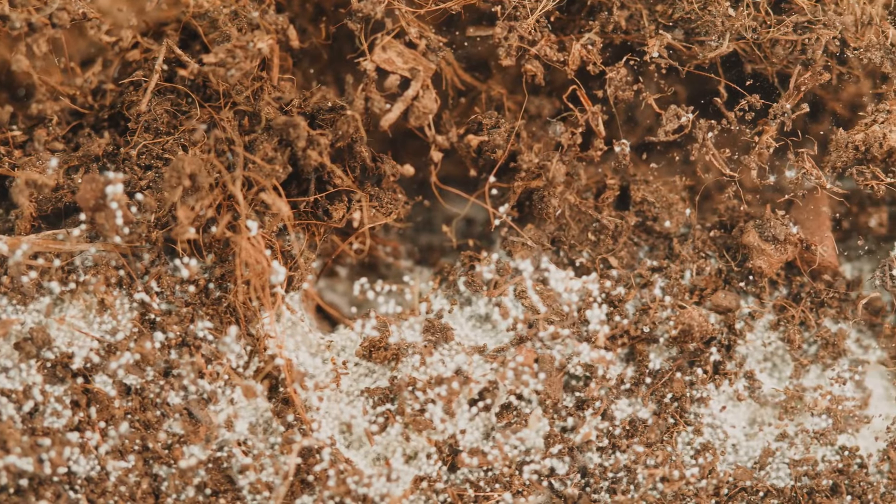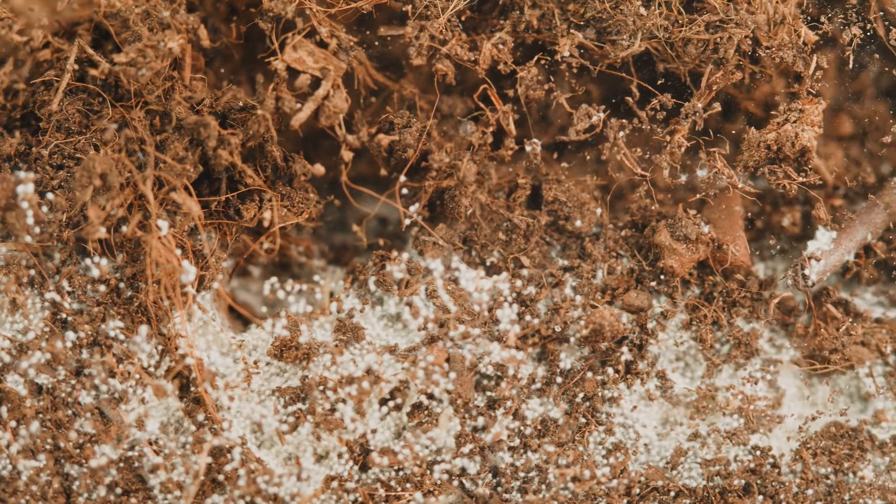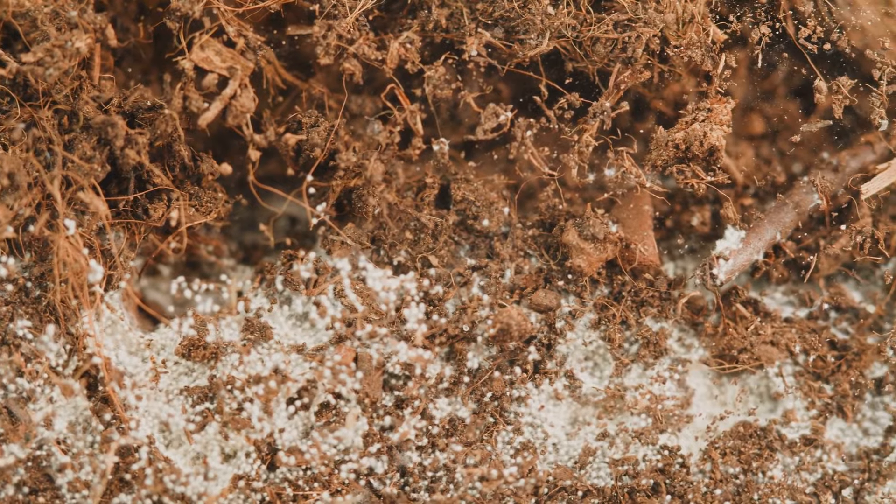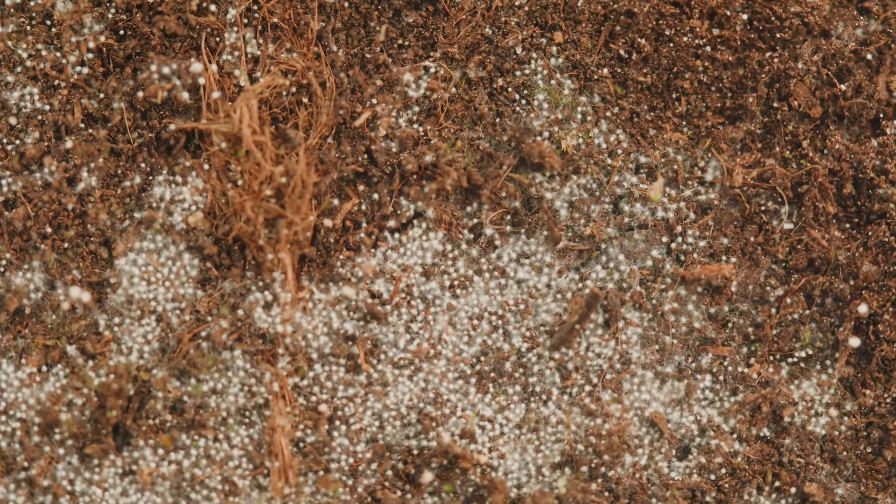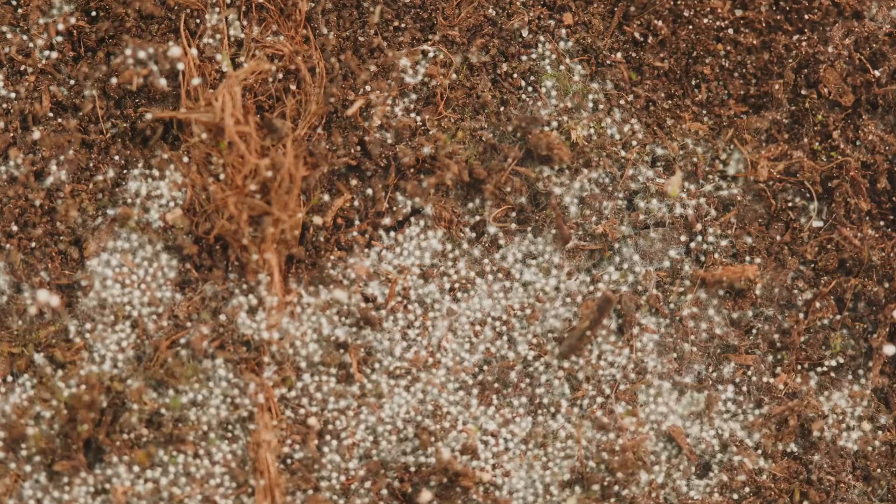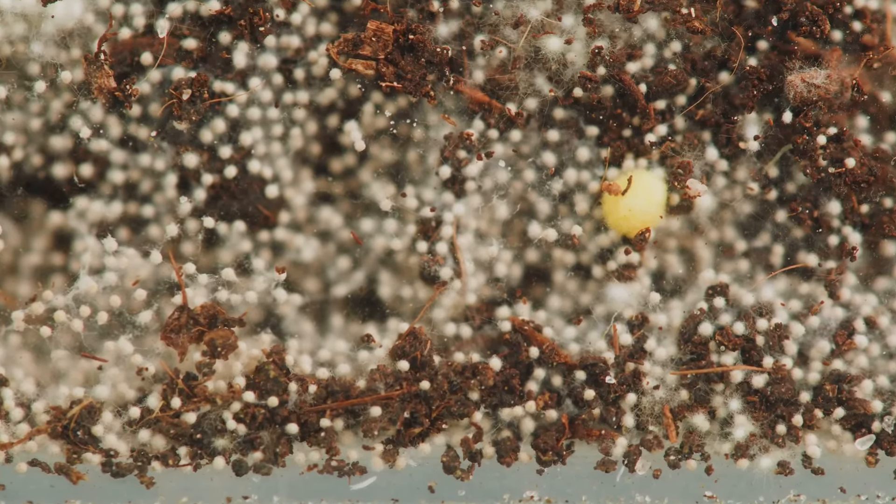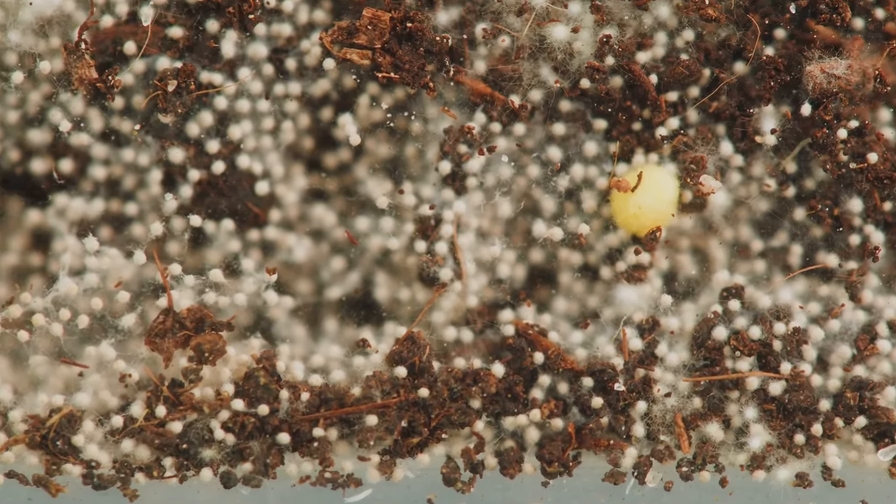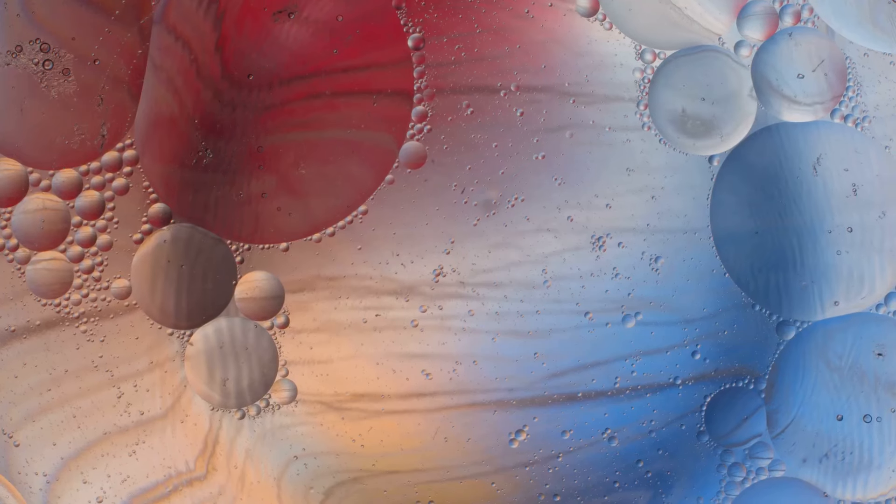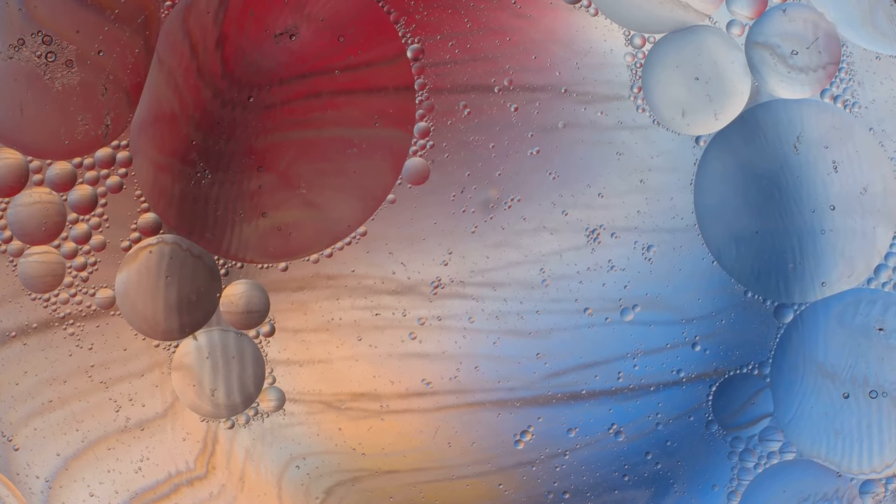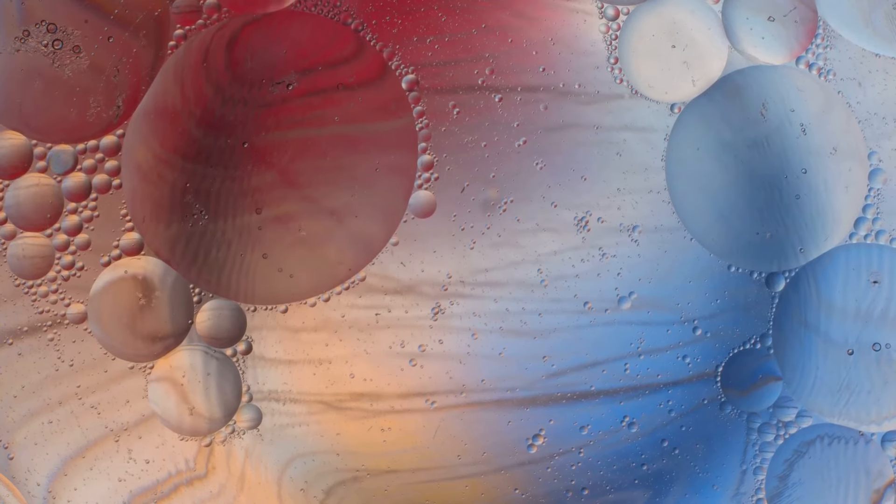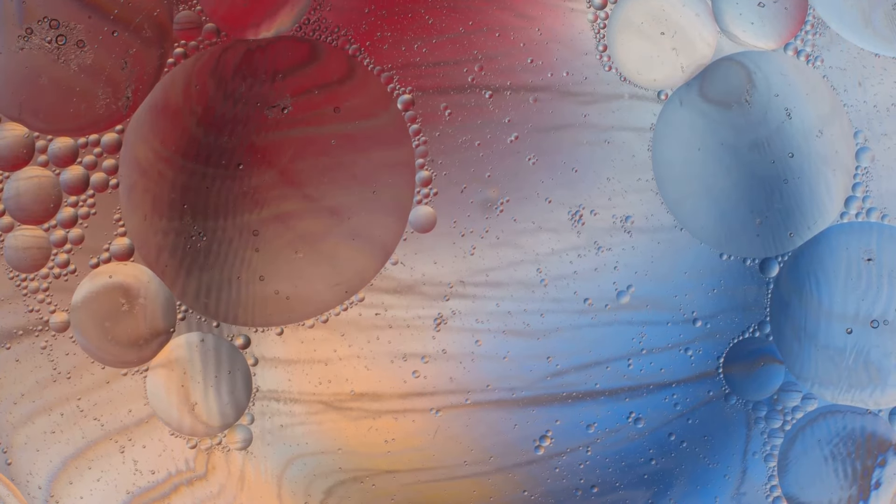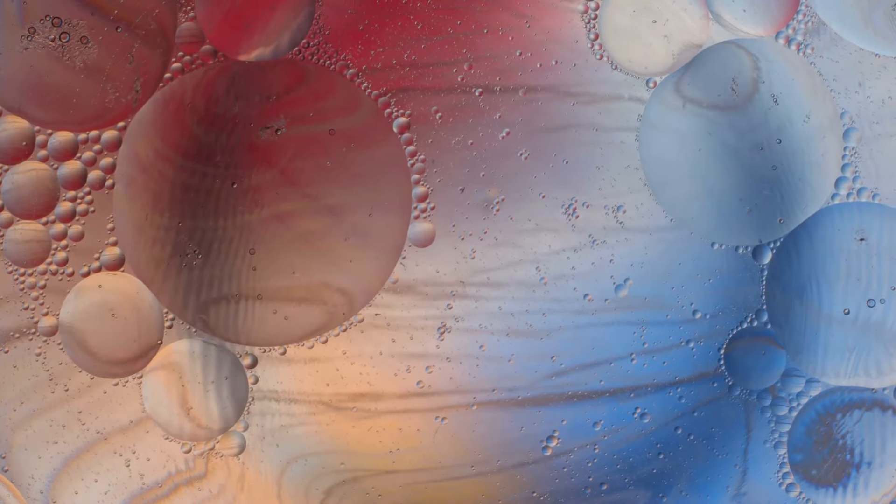The story of life on Earth is a story of microorganisms. They were here at the beginning, they have shaped the world in countless ways, and they will continue to do so into the future. They are the smallest of life forms, but their impact is immense. From a world dominated by single-celled organisms to the complex web of life we see today, microorganisms have been the silent architects of life.